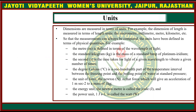Measurements can always be compared. The units have been defined in terms of physical quantities. For example, the meter is defined in terms of the wavelength of light. The standard kilogram is the mass of a standard lump of platinum and iridium. The second is the time taken for light of a given wavelength to vibrate a given number of times. The degree Celsius is one-fourth part of the temperature interval between the freezing point and the boiling point of water at standard pressure.